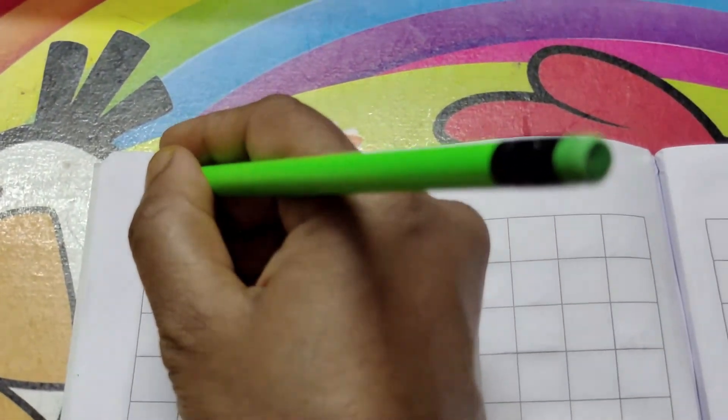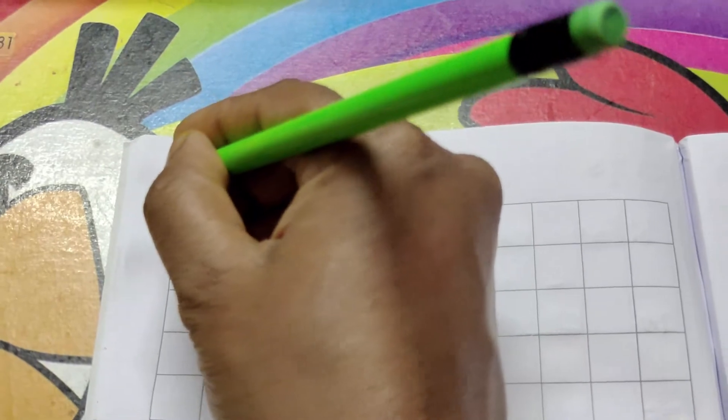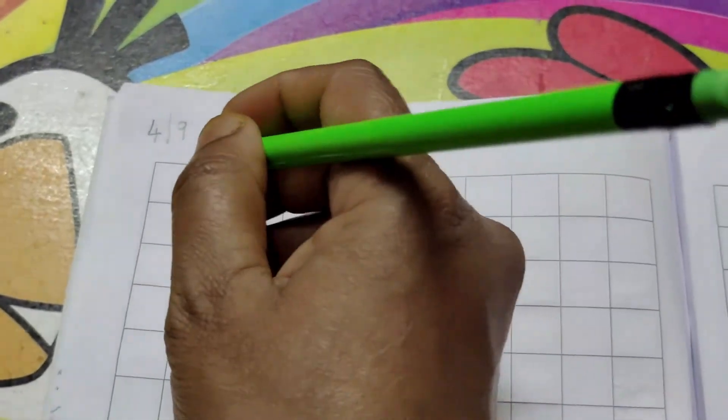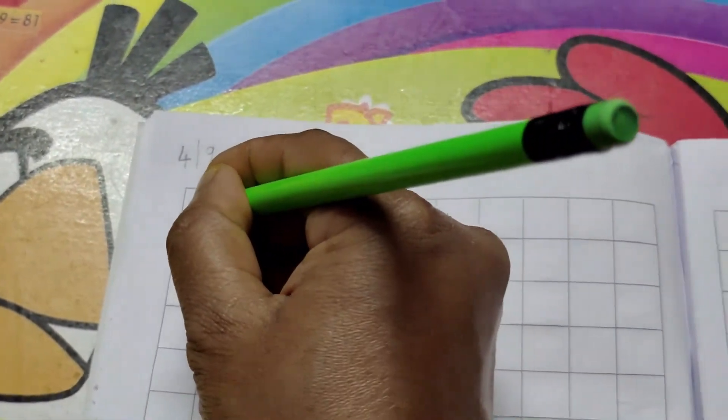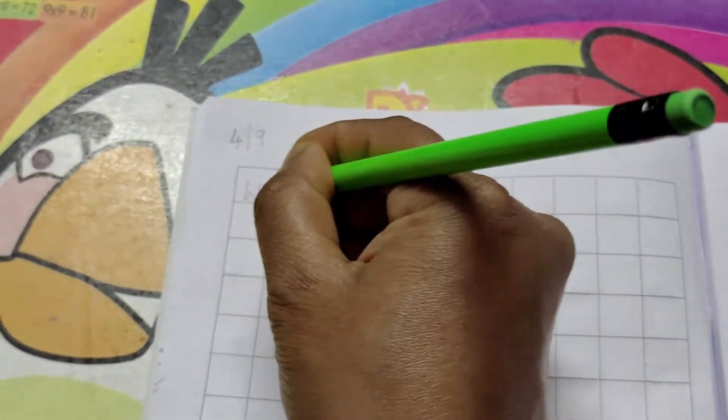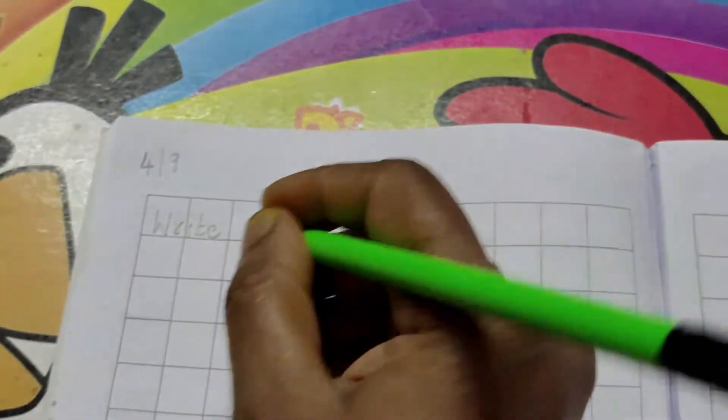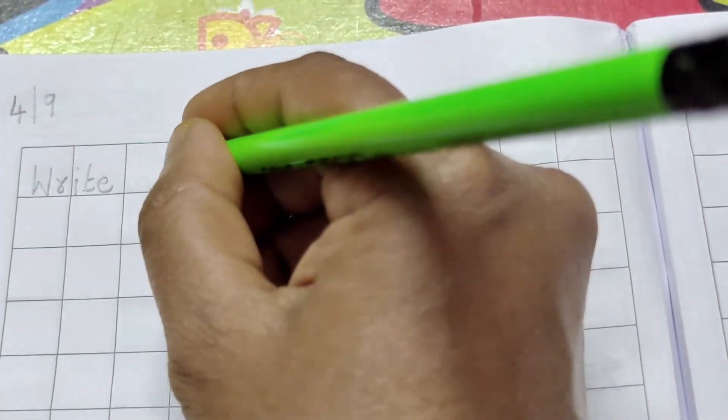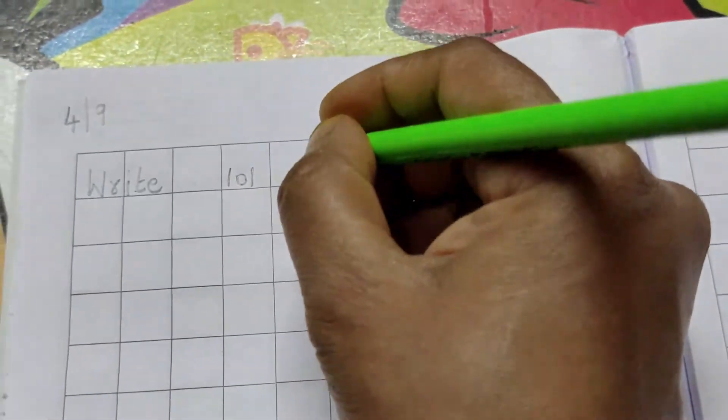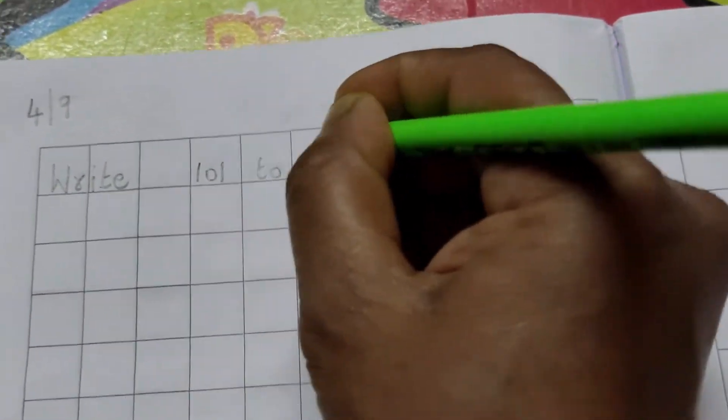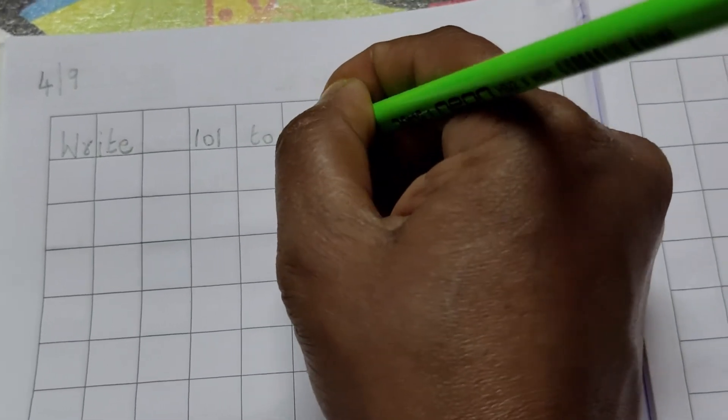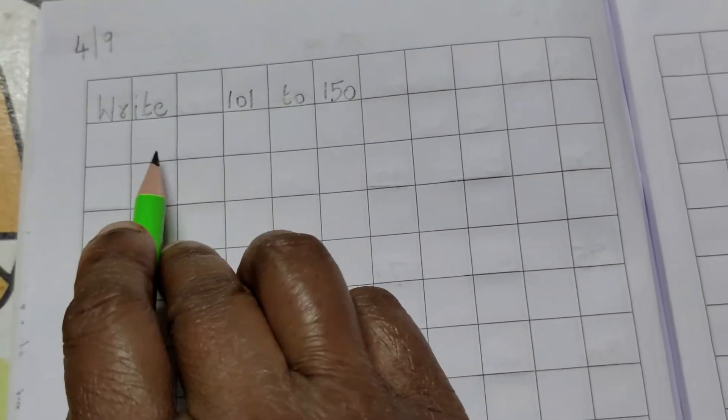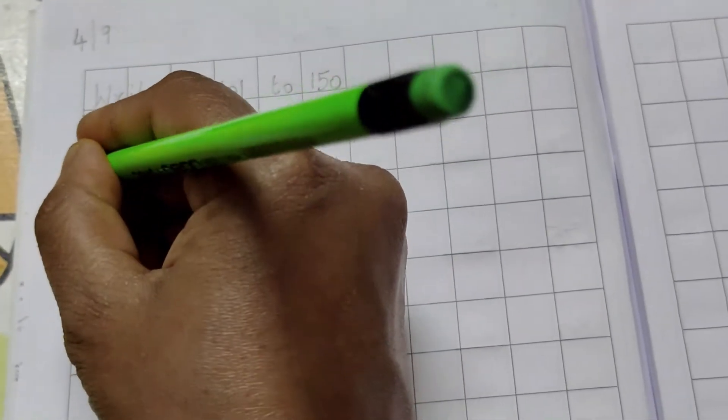Now, I will show you how to write in the notebook. First, write the date. 4 bar 9. First, write the date. Then, in the first line, write the heading. WRITE. Always start with the capital letter children. WRITE. One finger space. 101 TO 150. After heading, leave one line. After writing the heading, leave one line. Then, start the first number.